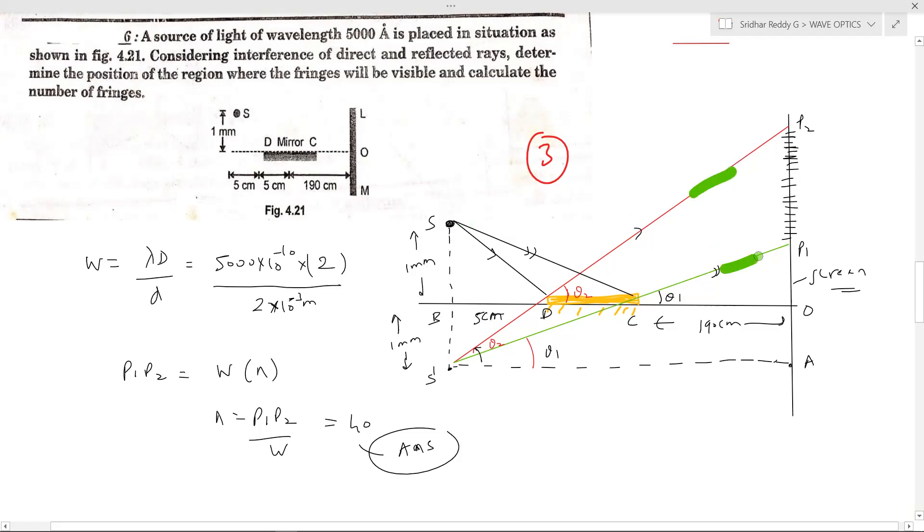So what are these two rays? They are the P1 P2, they are the reflected rays. Then a direct ray from the source will reach the screen, and the direct rays will also reach the other part of the screen.